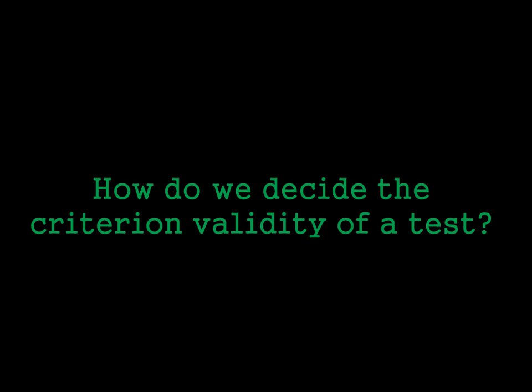So how do we decide the Criterion Validity of a test? Well, this usually involves an experiment where we measure subject scores in both our new test and the gold standard, and then we compare them by doing something called a correlation. This is something that we'll explore perhaps in lessons or lectures.